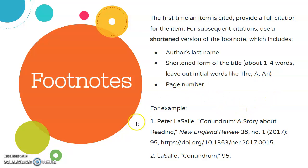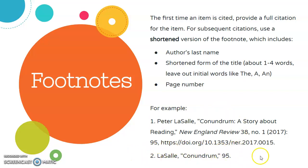Here's an example based on an actual journal article. As you can see, the first footnote, number one, is the full citation. But the following footnote, number two, is a shortened version of the note, so it only includes the author's last name, a shortened version of the title — in this case shortened down to one word — and the page number.